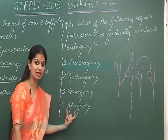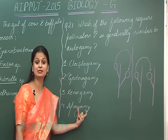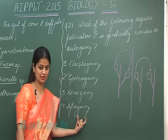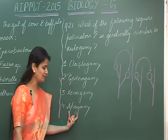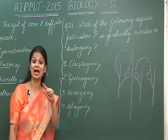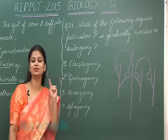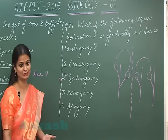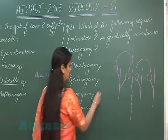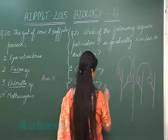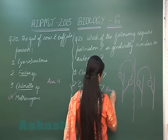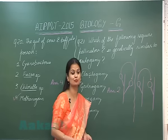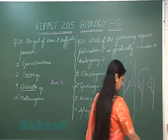Now apogamy — what does 'apo' mean? Apo means without, and 'gamy' is fertilization or fusion. So apogamy is formation of an embryo without fusion. This is not the right option here. So for question number 21, the right option is option number 2. Now let's move on to question number 22.